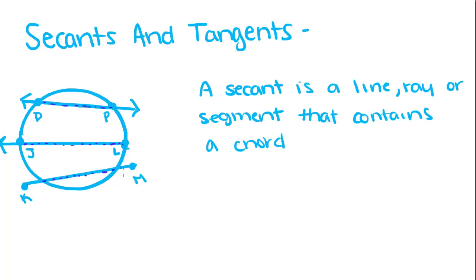So this line, line DP, this ray LJ, and this segment KM, are all secants of this circle.